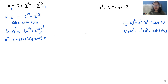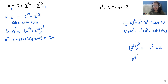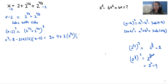On the right-hand side: (2^(1/3))³ equals 2^(3/3) which is 2. Similarly, (2^(2/3))³ equals 2^(6/3) which is 2² = 4. So we get 2 plus 4, plus 3 times 2^(1/3) times 2^(2/3), in the bracket (2^(1/3) plus 2^(2/3)).